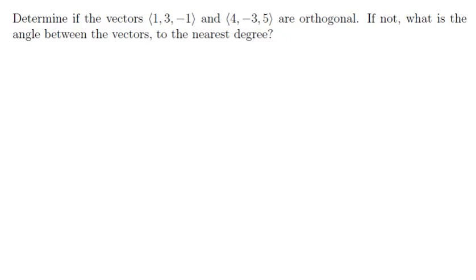Determine if the vectors 1, 3, negative 1, and 4, negative 3, 5 are orthogonal. If not, what is the angle between the vectors to the nearest degree?